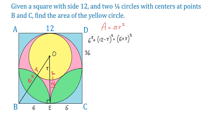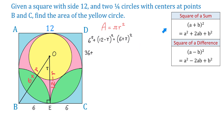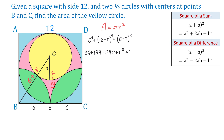6 squared is 36. To raise the binomials to the second power, we use the formulas for the square of a sum and the square of a difference. For (12 minus R) squared: 12 squared is 144, minus 2 times 12 times R gives minus 24R, plus R squared. On the right side, 6 squared is 36, plus 2 times 6 times R gives 12R, plus R squared.